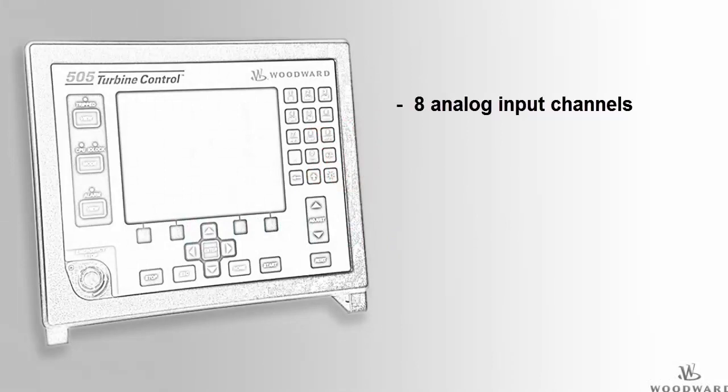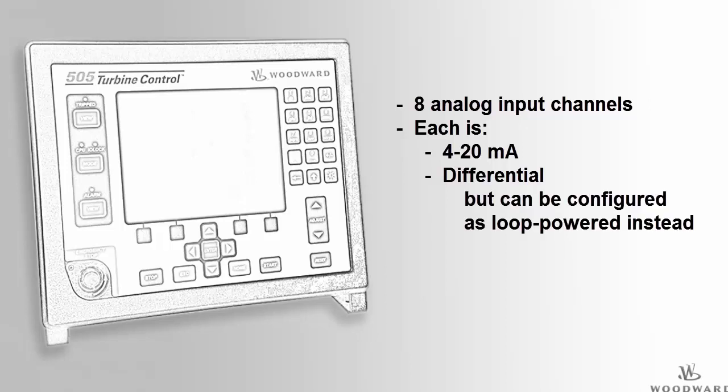The 505 has 8 four to twenty milliamp analog input channels. Each channel is differential but can be configured to be loop powered.